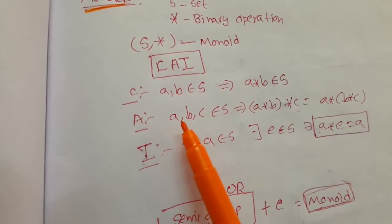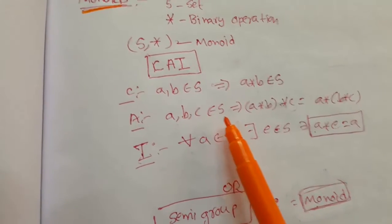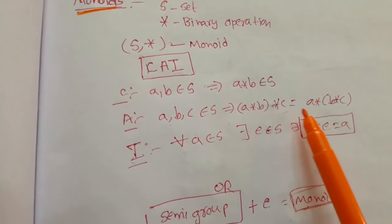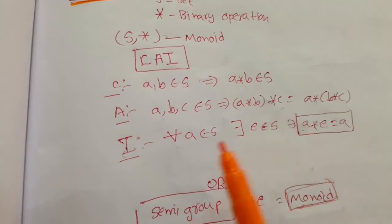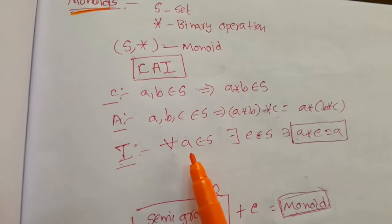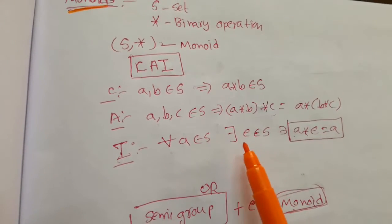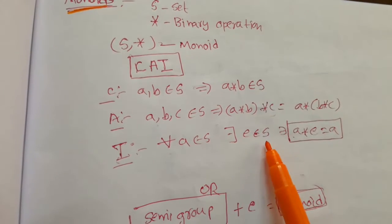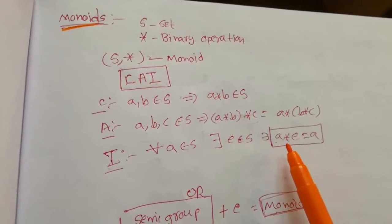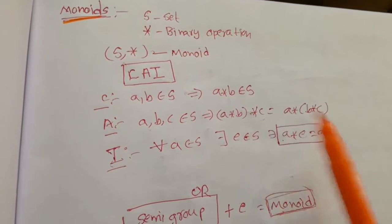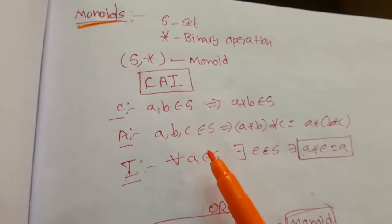Associative property says A, B, C belongs to S, then A star B star C equals A star B star C. And identity property says for all A belongs to S, there exists E belongs to S such that A star E equals A.